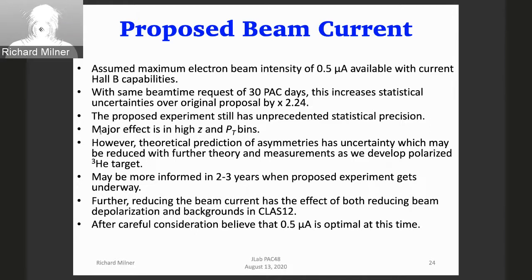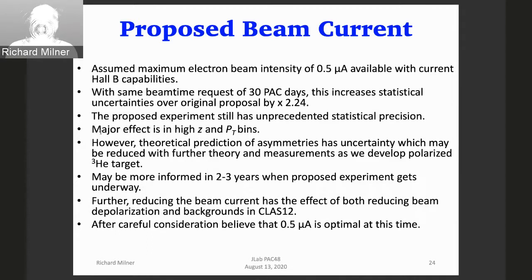Reducing the beam current has the effect of reducing both beam depolarization — now half a microamp versus 25 microamps at Bates in 1993, a factor of 50 reduction — and also backgrounds. We carefully considered it and feel this is the optimal current based on all considerations.